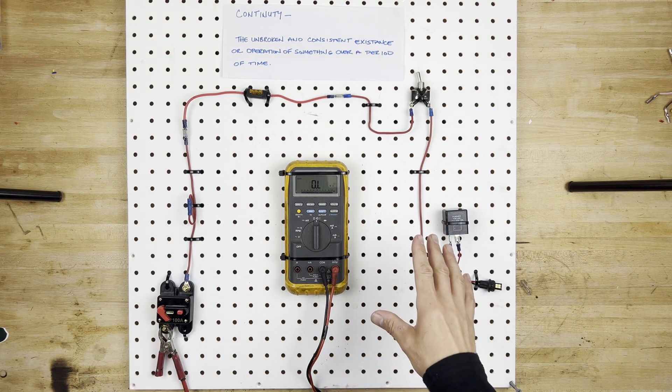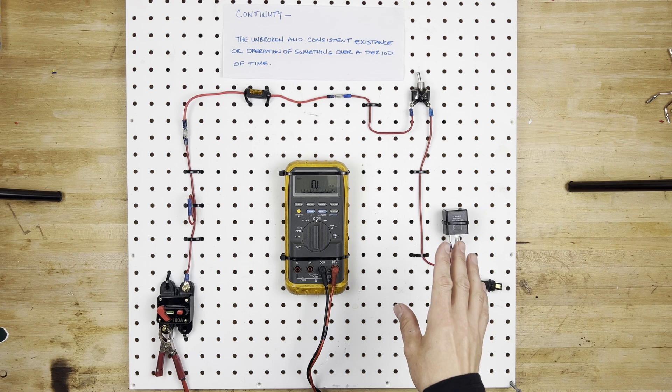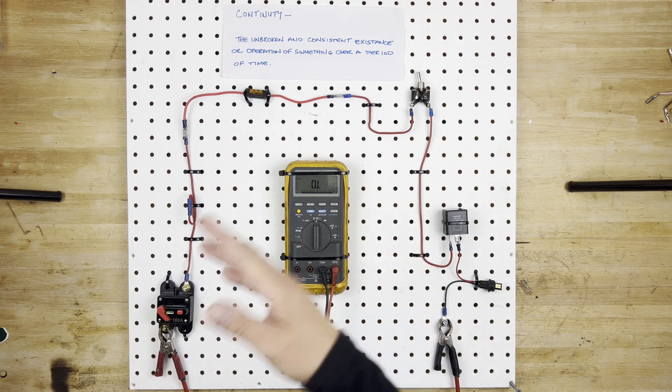Now, if you're going to be checking continuity through a circuit, make sure there's no power going through the circuit, because you can't check resistance if there's power going through it.